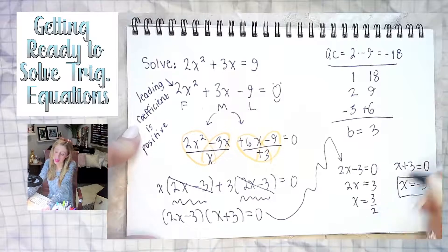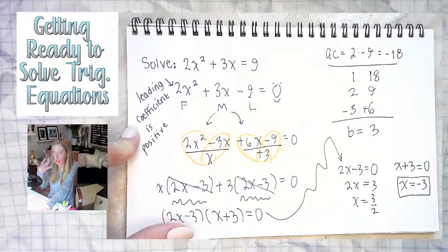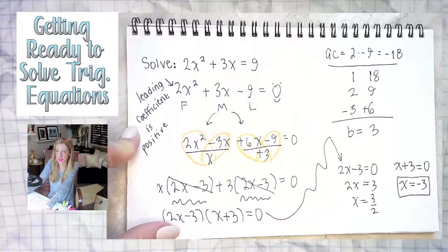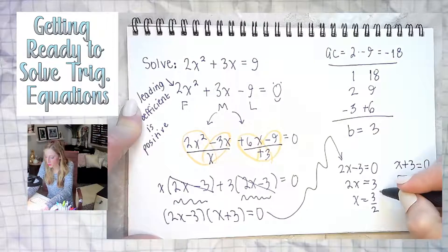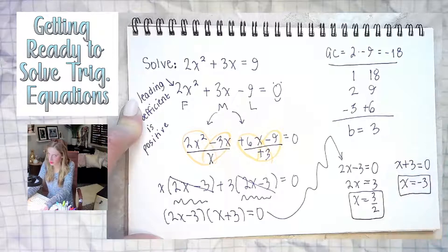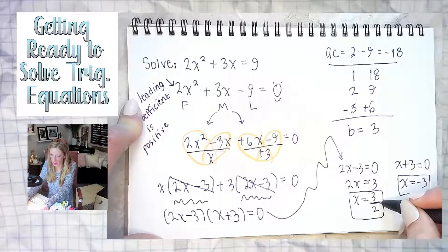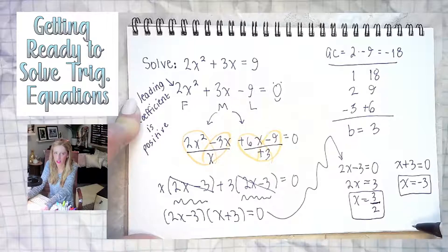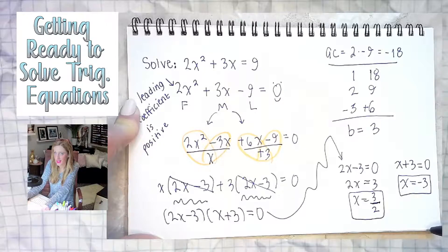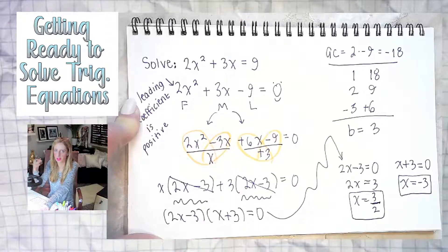What's 3 over 2 as a decimal? 1.5. Keep in mind: over 2 means you're dividing by 2, which means you're finding half of something. Half of every odd number as a decimal will end with 0.5. Half of 3 is 1.5, half of 5 is 2.5, and so on. So keep that in mind — that's important.